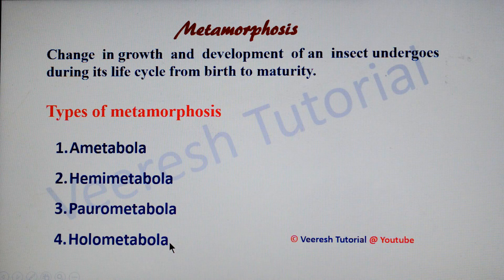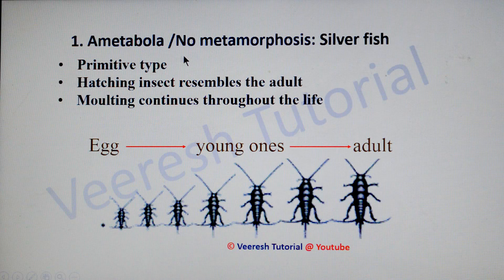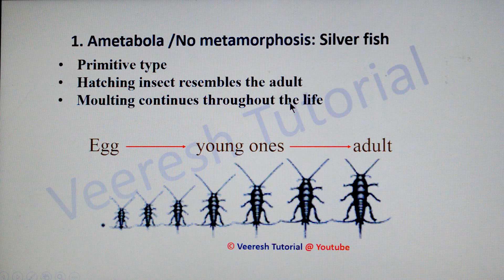Ametabola is also called as no metamorphosis. You can see it in silverfish. It is a primitive type of metamorphosis where the hatching insect resembles the adult, and molting continues throughout the life even after attaining sexual maturity. There are three stages in its life cycle: egg, young ones, and adult.